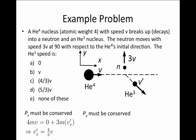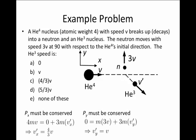To find the y component, we apply py conservation. Before disintegration, py is zero because helium-4 travels purely in the x direction. After disintegration, the neutron of mass m travels purely in the y direction at speed 3v, and the helium-3 of mass 3m moves partially in the y direction with speed vy prime. Setting these equal and solving gives vy prime equals v.